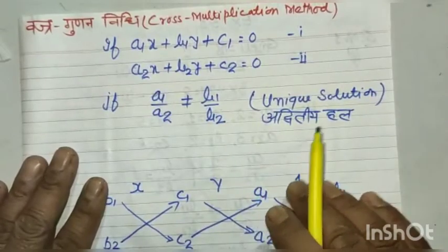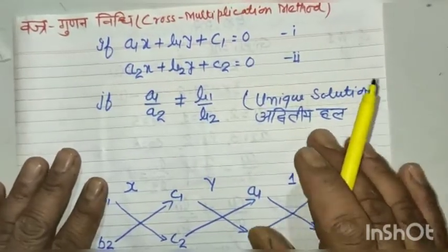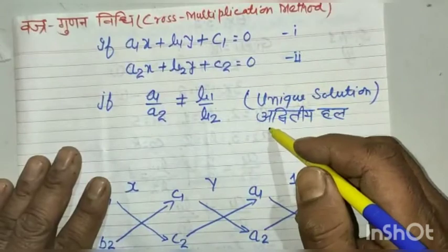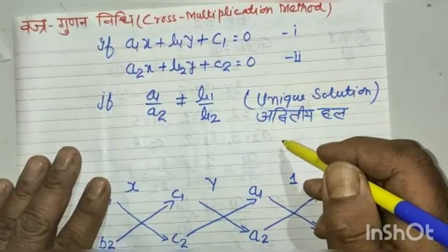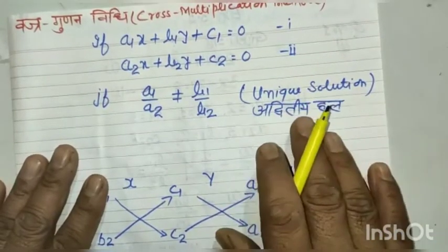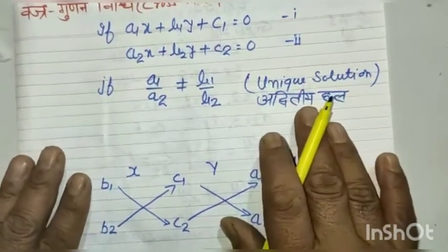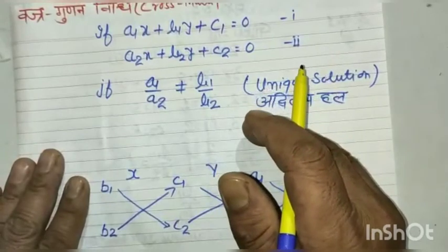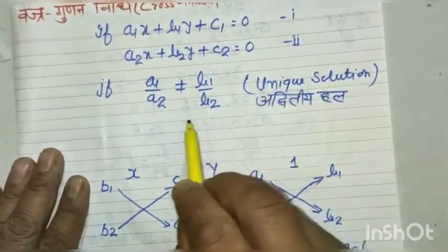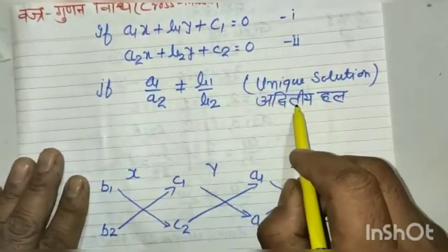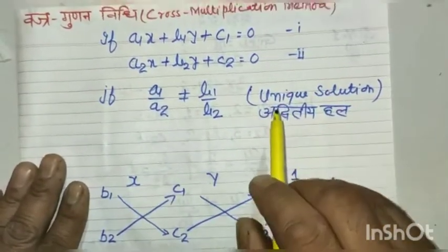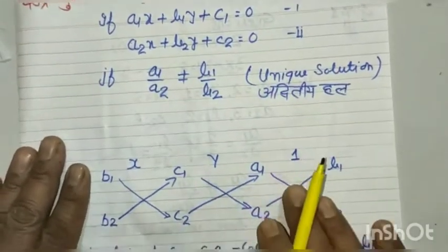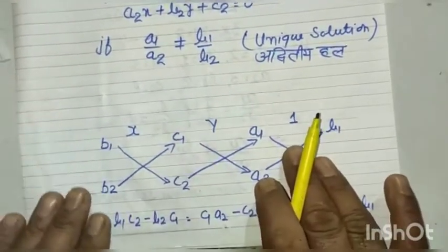If the given pair of linear equations has a unique solution, then we can calculate the value of x and y by using the method of cross multiplication. So we have to use this diagram.